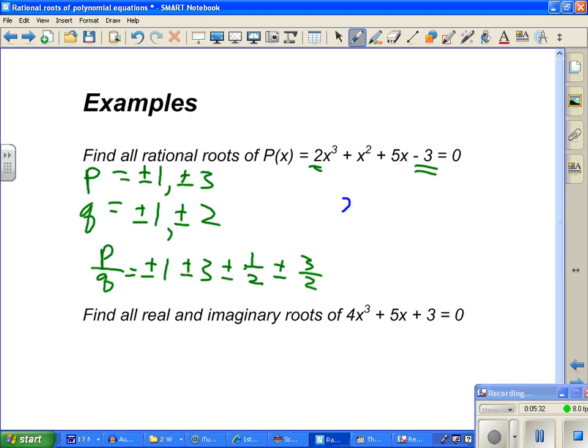Now I do synthetic division until I get something. So 2, 1, 5, negative 3. Plug something in. Let's try 1. 1, or 2 here. 2 times 1 is 2, 3. 3 times 1 is 3, 8, 8, 5. Not 0. Not the answer we're looking for. Now my answer could be one of these fractions here. So let's go ahead and try one of those. Let's try 1 half. So 2. 1 half times 2 is 1. That's 2. That's 1. That is 4, or 6. 6 times 1 half is 3. Oh boy. We've done it. 0.